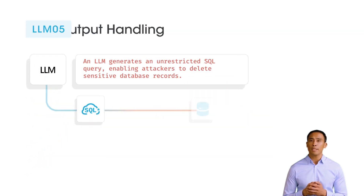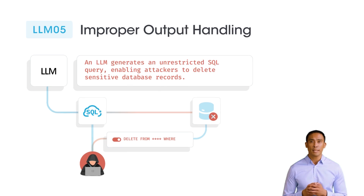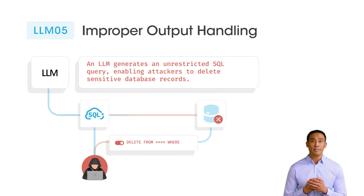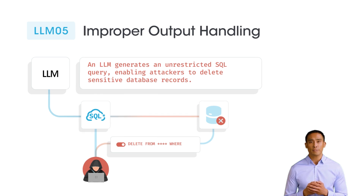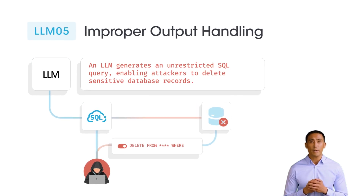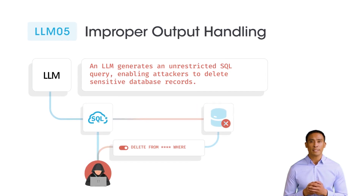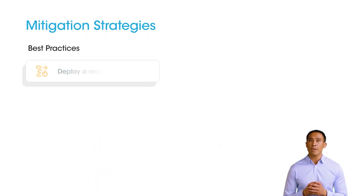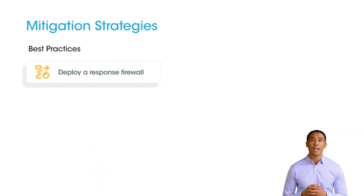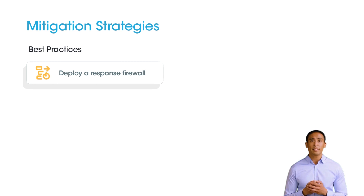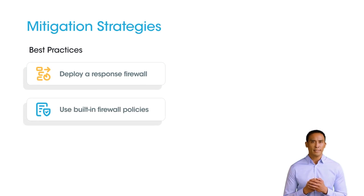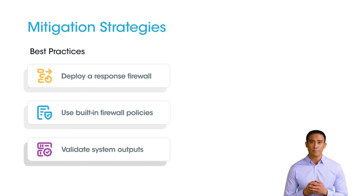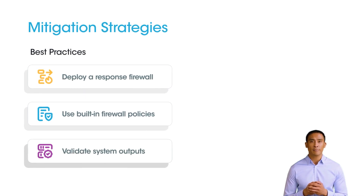Improper output handling occurs when model responses are not properly validated or sanitized before being passed to downstream systems. Example: an LLM generates an unrestricted SQL query, enabling attackers to delete sensitive database records. Deploy a response firewall to filter and validate AI outputs against company policies. Use built-in firewall policies to block sensitive, offensive, or malicious content. Validate system outputs before execution in downstream applications.